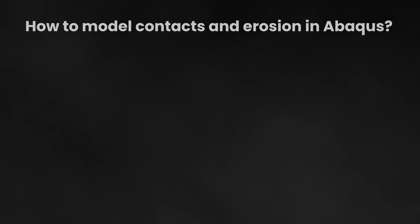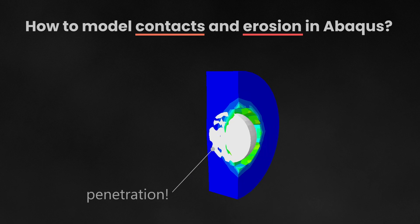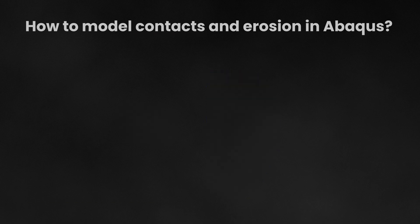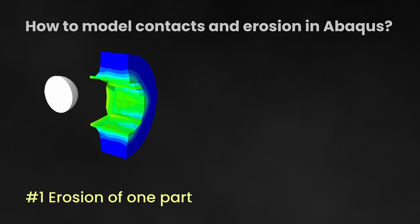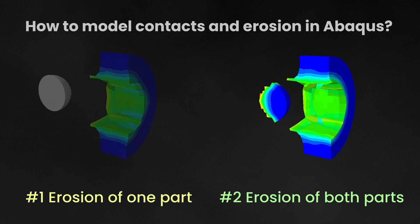Welcome to the TechnoDigital School. In today's video we will be looking at a very common problem that appears in Abacus when we define a contact and also include damage in the parts, so that elements that fail are removed from the simulation and eventually the contact doesn't work. First we will show how to solve the problem when only one of the parts is damaged, and then we will see how to solve it when both parts can be damaged.